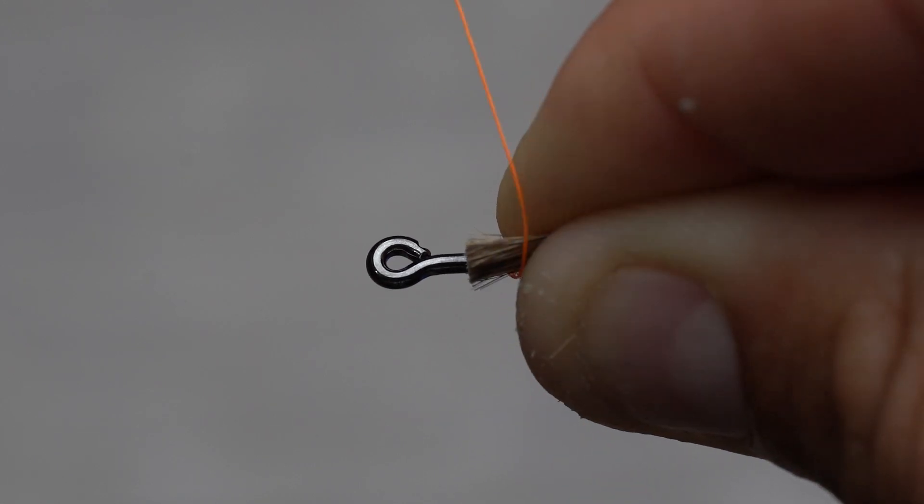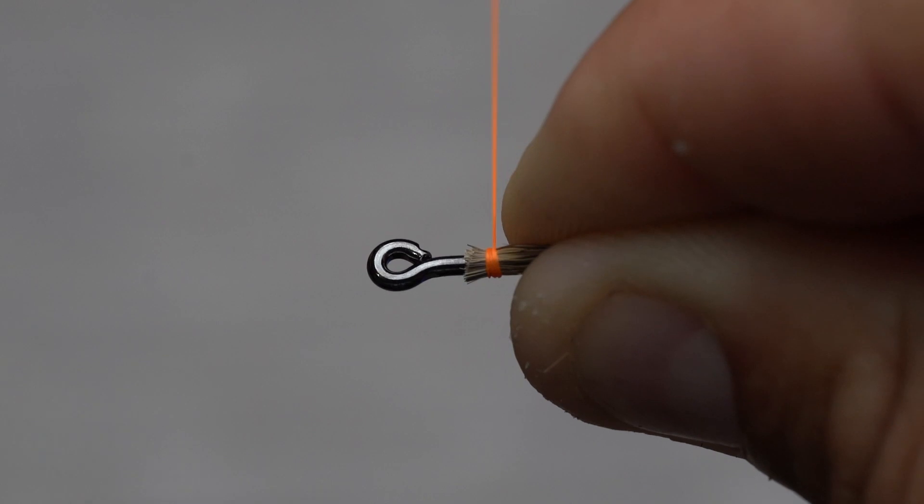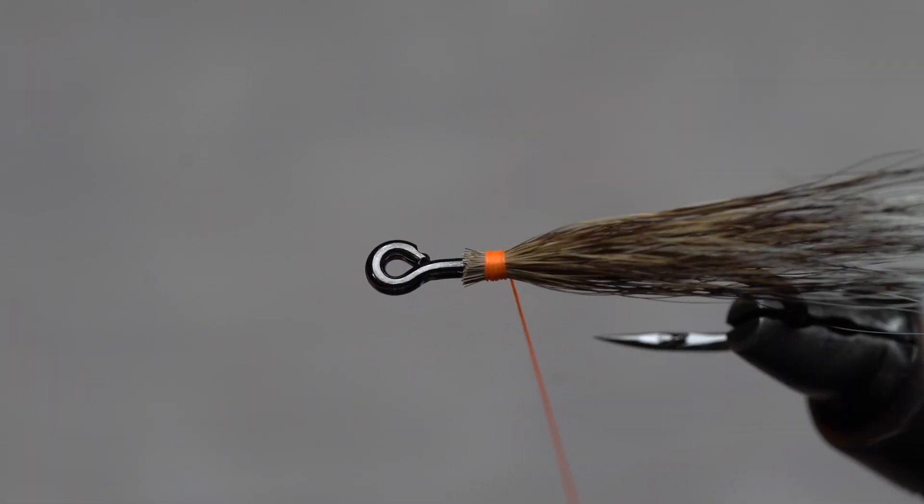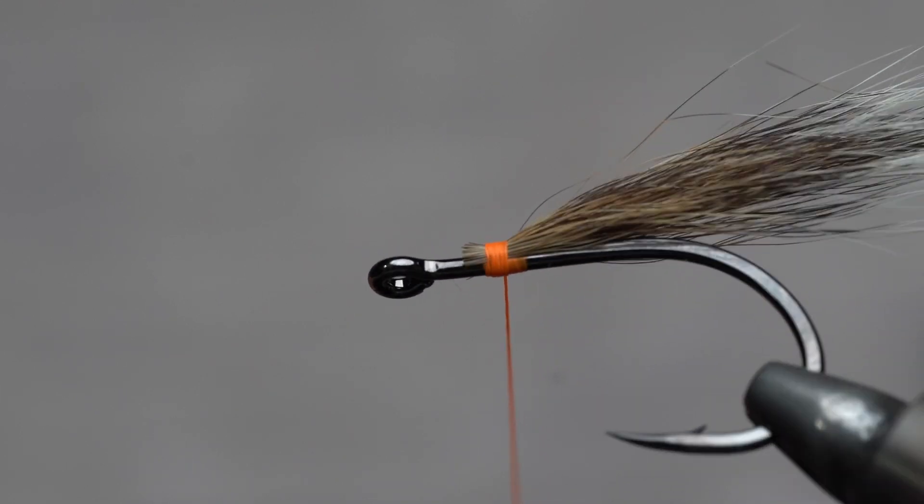Take the material in your hand as far up as possible. Take one loose wrap, allowing the thread to jump backwards when you loosen up on the bobbin. Make sure you have the material cut flush if you want a blunt tie-in.